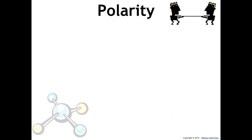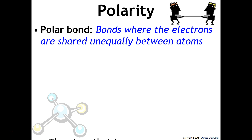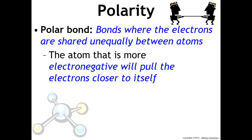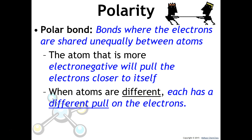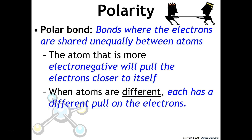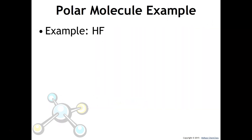Molecular polarity is much like a tug-of-war. In polar bonds, electrons are shared unequally between two different atoms that have different attractions for electrons. The atom that is more electronegative will pull or attract the electrons closer to itself, so each atom has a different pole or attraction, resulting in partial charges forming on the molecule.